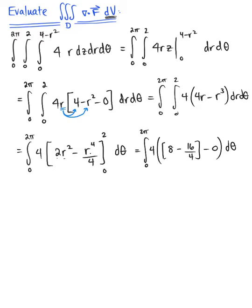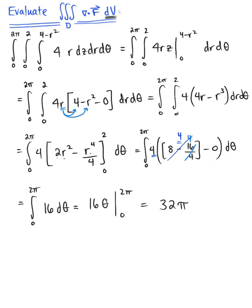We simplify to get the integral from 0 to 2 pi of 16 d theta, which is a straightforward integral. This gives us 16 theta evaluated from 0 to 2 pi, for a final answer of 32 pi.